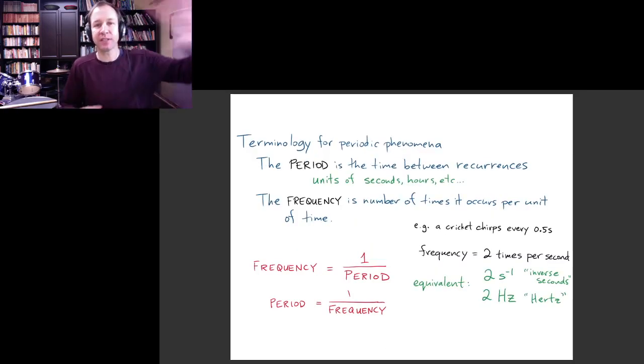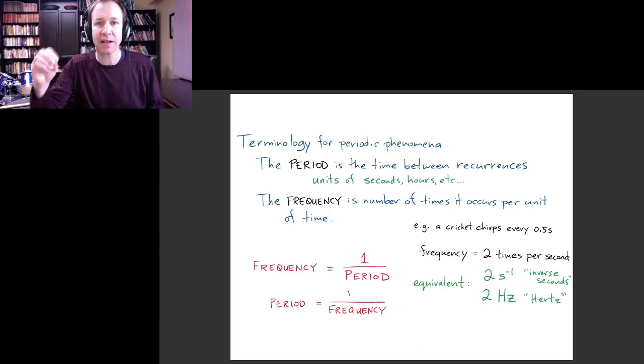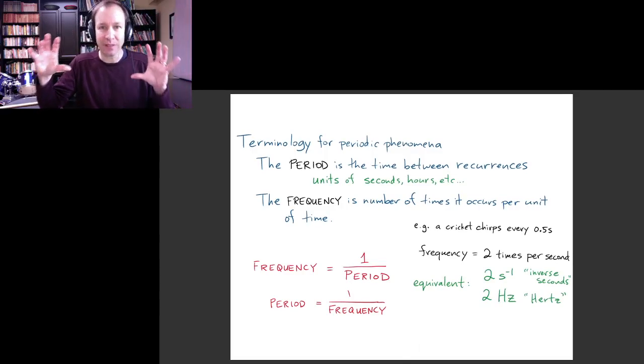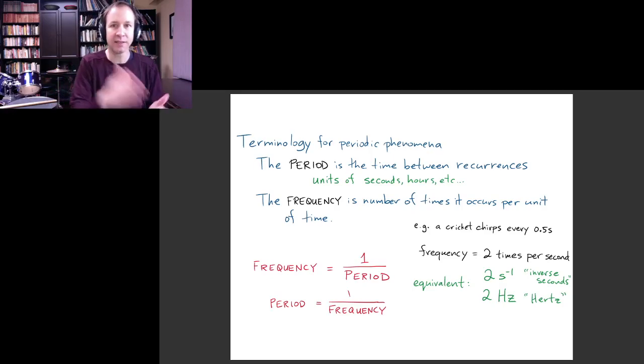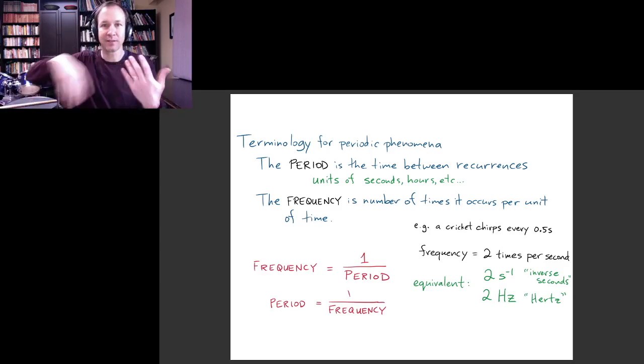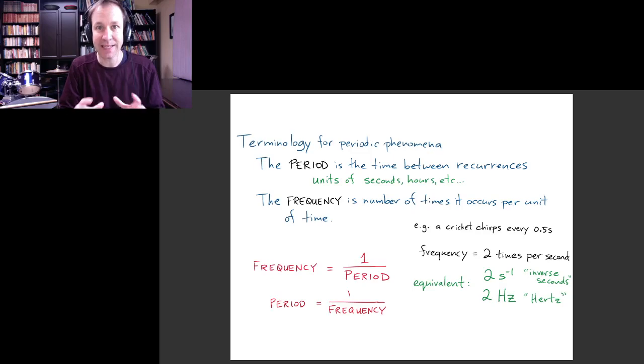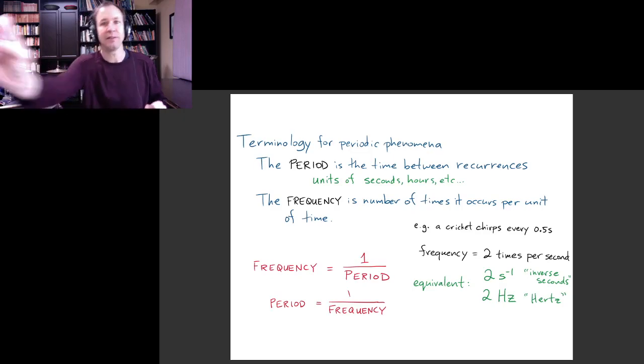I've used a couple of words - I used the word period already. Let me just talk about the language that we use for periodic events and how these various words and terms are related to each other. The period is just an amount of time - it's the time between recurrences of our periodic event.